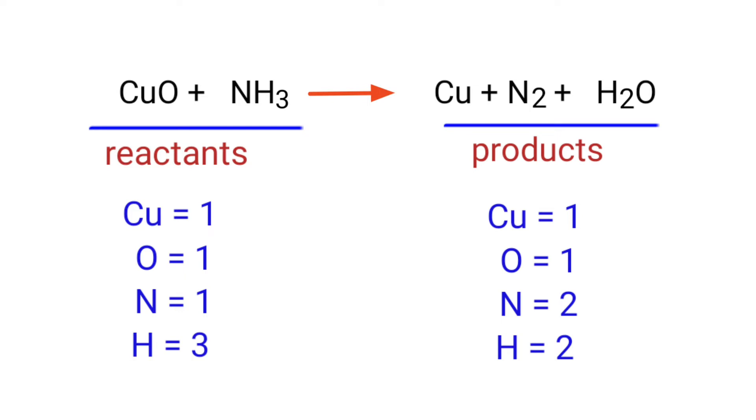In this equation, we need to balance the Nitrogen atoms first. To do this, we need to put a coefficient of 2 in front of NH3.